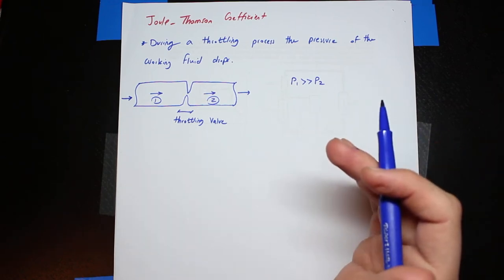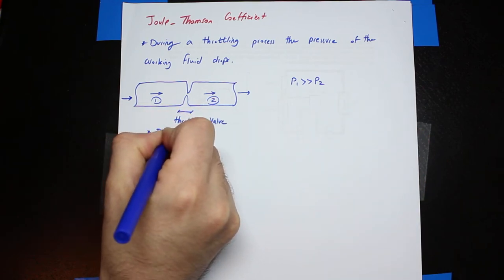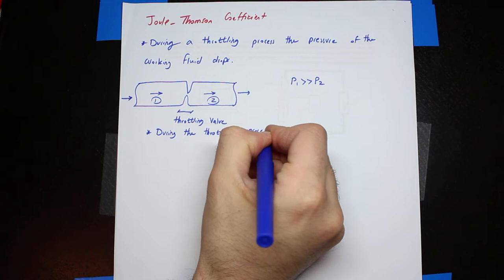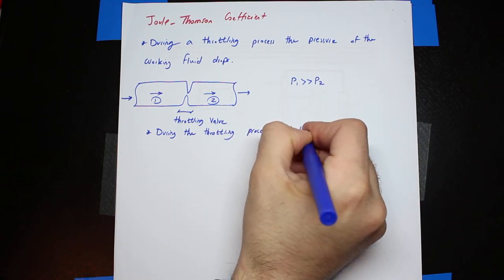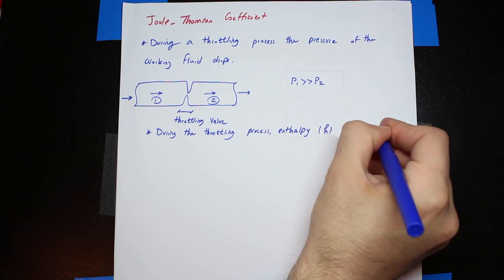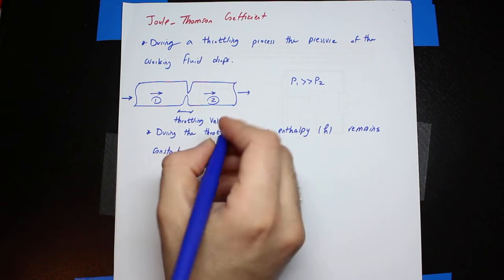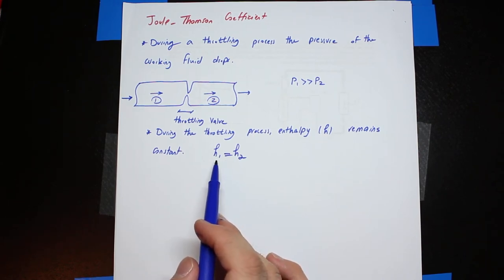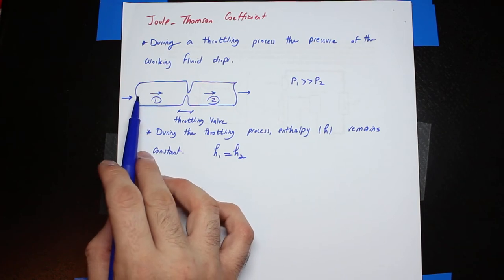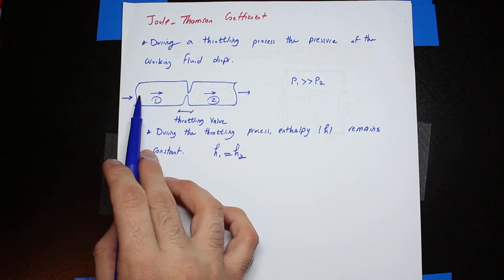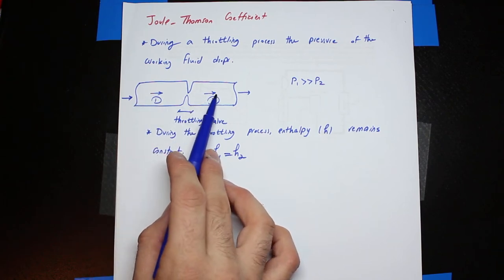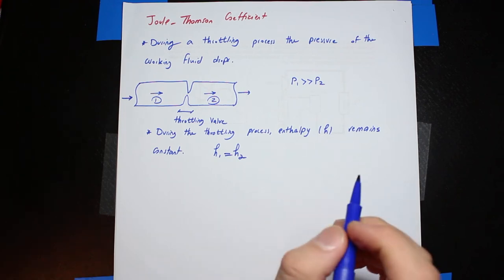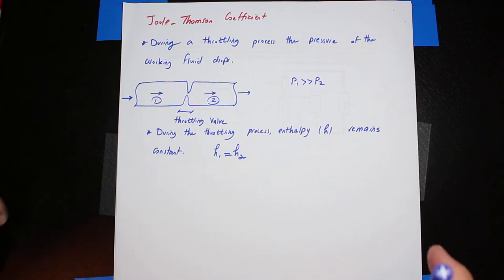We know that the throttling process is a constant enthalpy process. During the throttling process, enthalpy H remains constant, so H1 equals H2. The reason behind this is that by applying conservation of energy, the only energy entering the throttling valve is through mass, and the only form of energy leaving the valve is again through mass — and enthalpy H is the only term in that conservation of energy equation. Now the question is: what happens to the temperature?